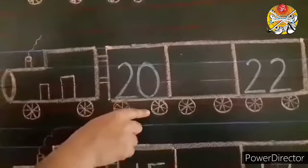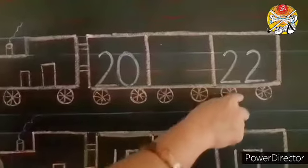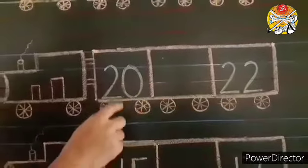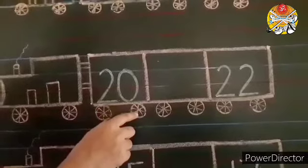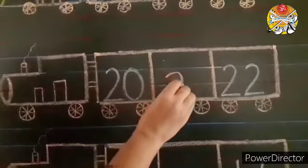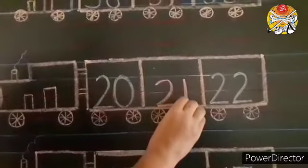Now look here. Which numeral is written here? 20. And which numeral is this? 22. So children, what comes after numeral 20? 22? No. 21. So we will write here numeral 21.